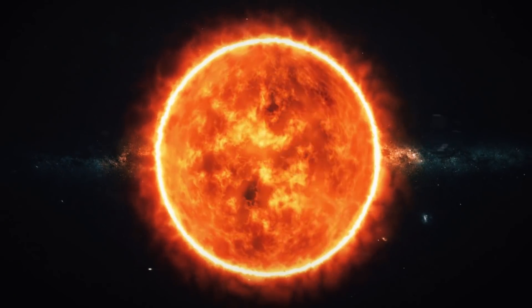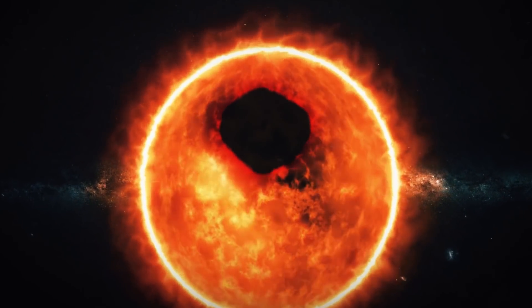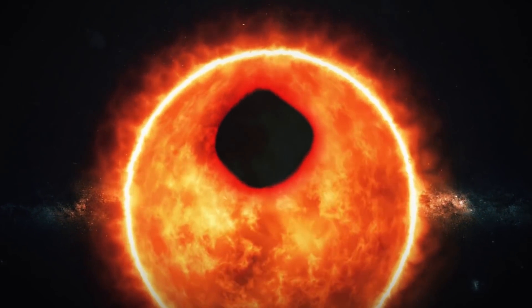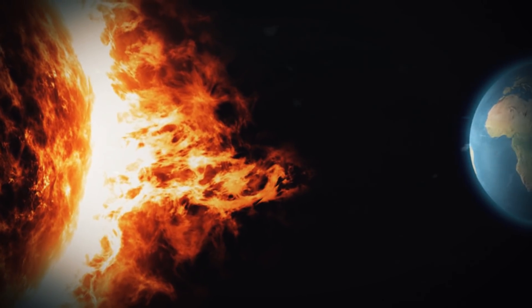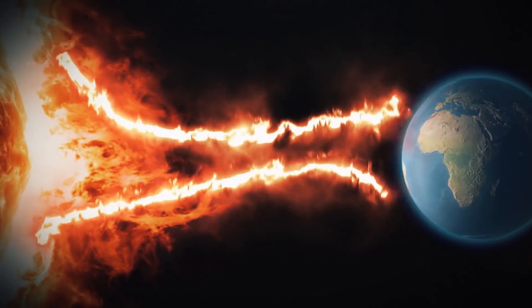When studying the Sun's surface, NASA discovered an enormous hole that was spreading over the surface of the Sun. As a result of these disruptions in the Sun's atmosphere, scientists believe a huge solar storm might form and have an impact on Earth.